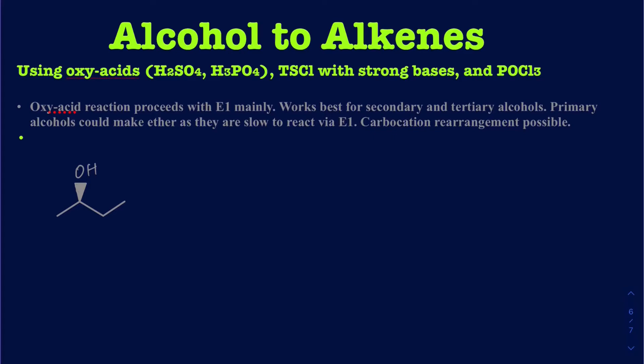In this video I'm going to be talking about how to convert alcohols to alkenes — or another way of saying it, how you're reducing alcohols into alkenes, because you're removing an oxygen, so it's technically a reduction. There are a couple of ways you can do it: either an oxyacid, TsCl with a strong base, or a direct elimination using POCl₃. I'll show you all three different ways of doing it.